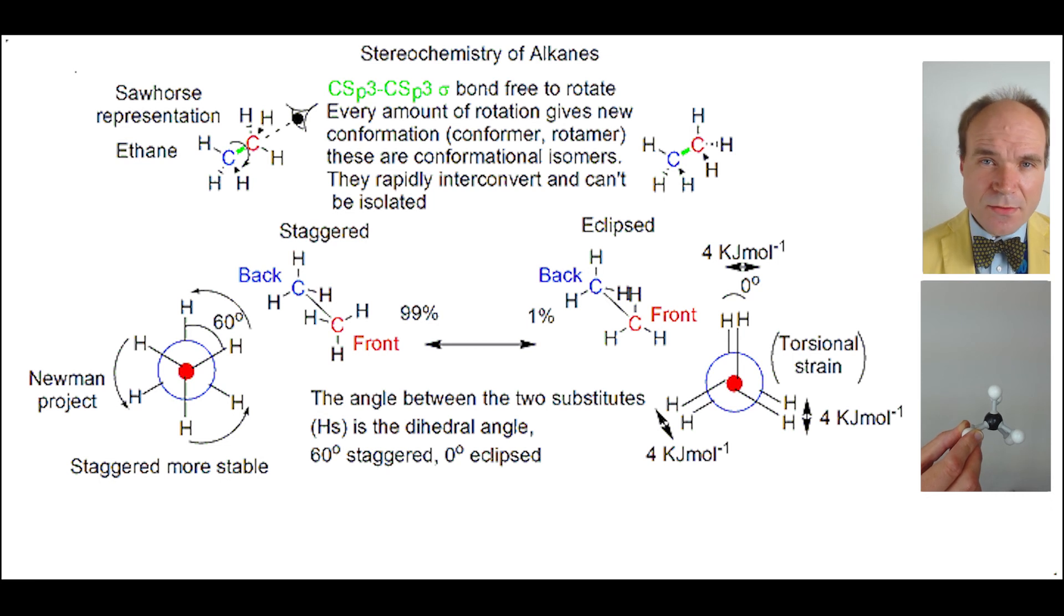If we think about the choice between a staggered ethane or an eclipsed ethane, it's mostly going to be the staggered form. The staggered form is more stable. In fact, it's 99% in the staggered form and only 1% in the eclipsed form.